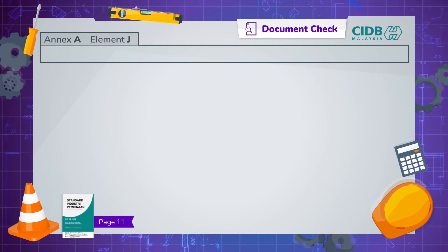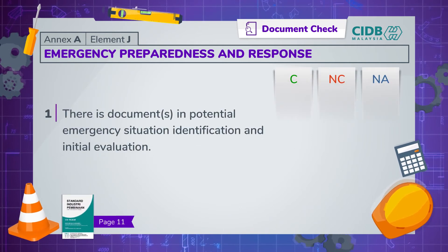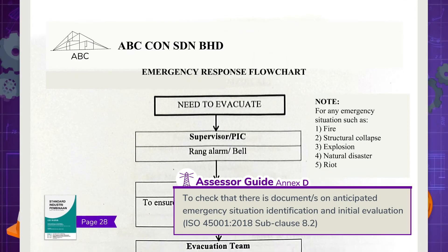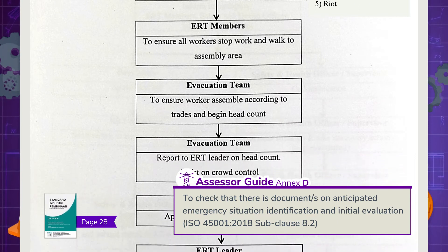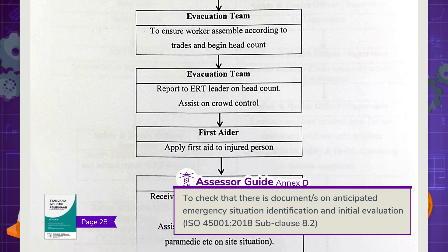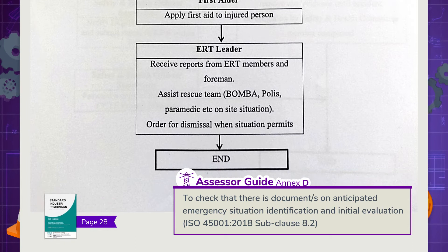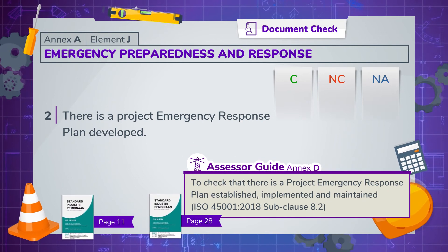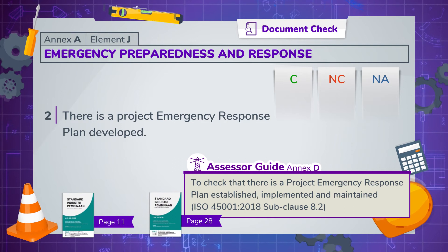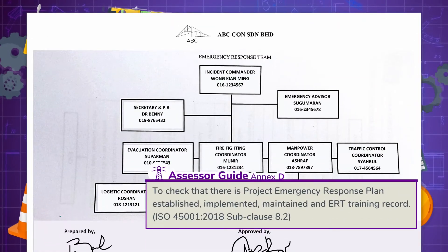Element J is where we assess documentation relating to emergency preparedness and response. There should be documentation on anticipated emergency situation identification and initial evaluation. Ensure that there is a project emergency response plan established, implemented and maintained. Verify that the emergency response plan has been established and trained by going through the ERT training records.